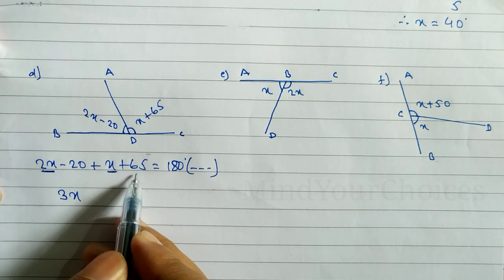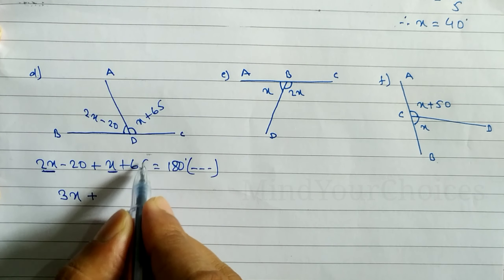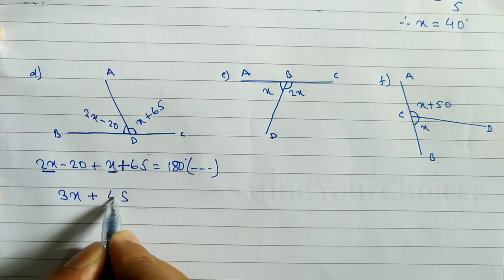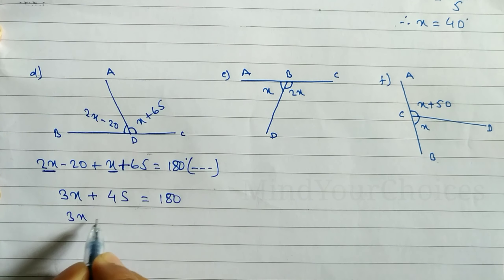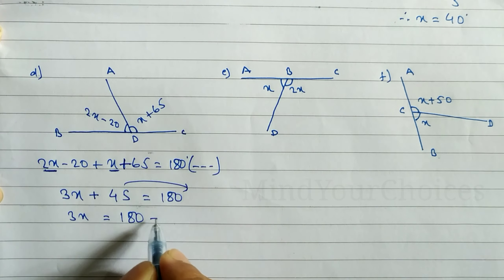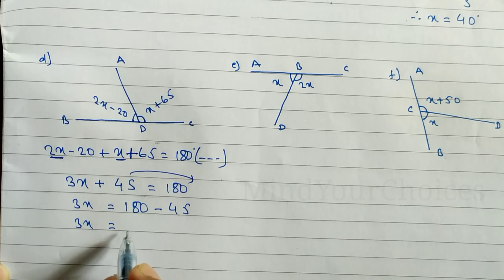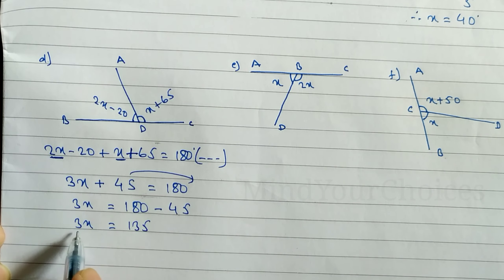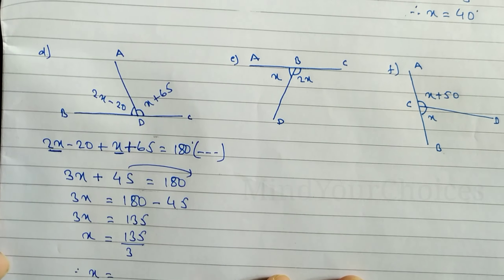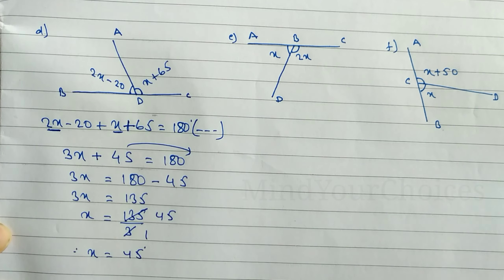Adding like terms: 2x plus x gives 3x. For the constants, minus 20 plus 65 gives plus 45. So 3x plus 45 equals 180. Taking 45 to the right side: 3x equals 180 minus 45, which is 135. Dividing by 3, the value of x equals 45.